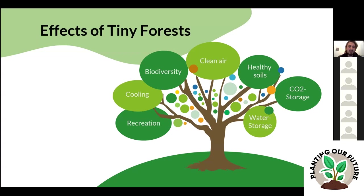So: a tiny forest is a natural ecosystem — or the kickstart of a little natural ecosystem — which makes most sense to implement on very degraded land in cities but also in rural areas. The whole methodology consists of proper soil preparation, native plants in high numbers and high structural diversity with many different tree species, a mulching layer, and a group of people who plant it and take care of it.